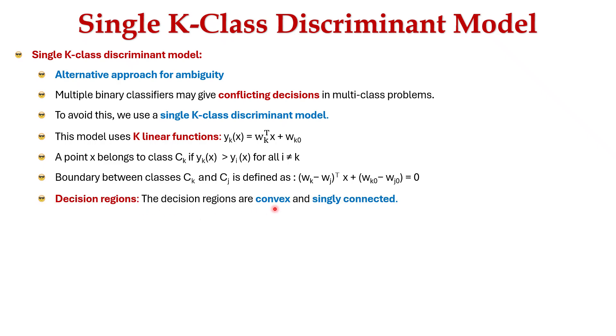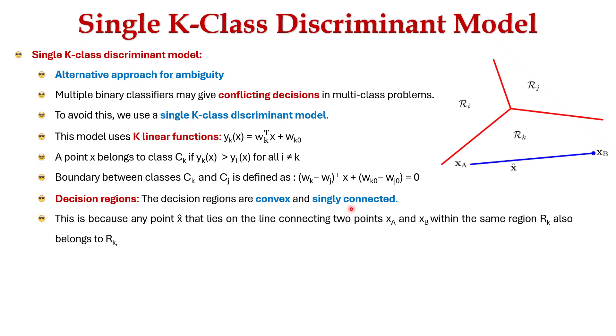The decision regions are always convex and singly connected. This is because any point x that lies on the line connecting two points x_a and x_b within the same region R_k also belongs to R_k.